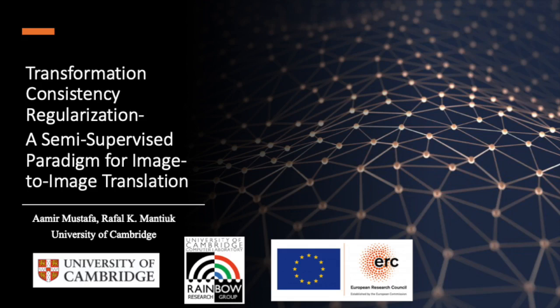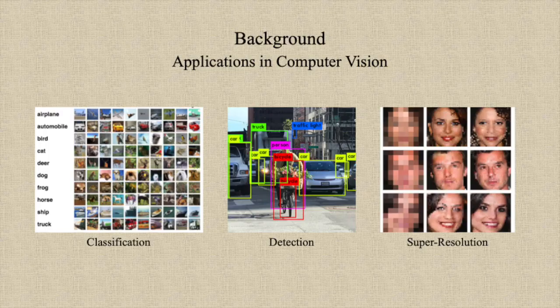In this video, I am going to talk about our paper titled 'Transformation Consistency Regularization – A Semi-Supervised Paradigm for Image-to-Image Translation,' a joint work with Dr. Rafal Mantek. In recent past, deep neural networks have achieved immense success in a wide range of computer vision applications, including image and video recognition, object detection, semantic segmentation, and image-to-image translation.